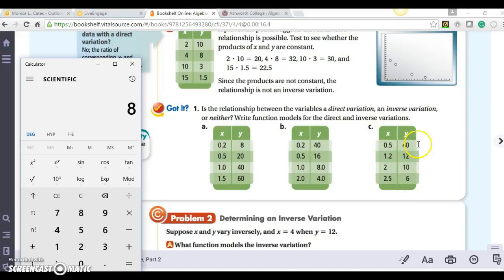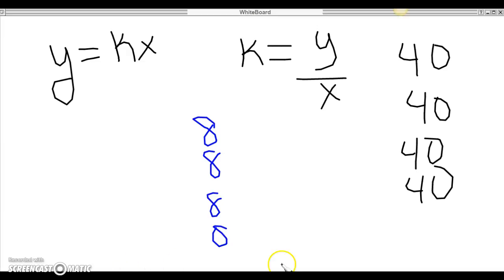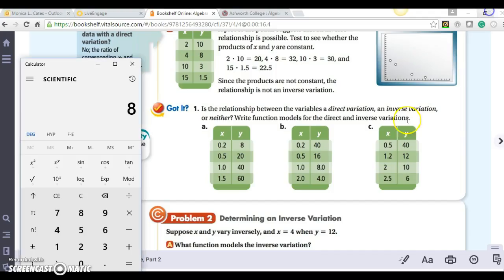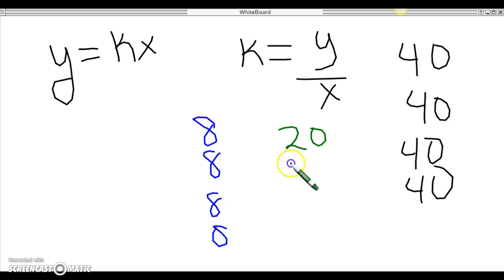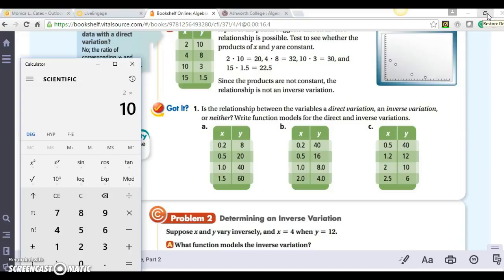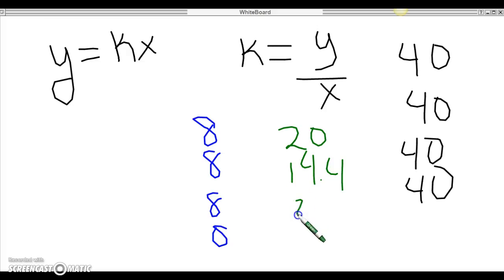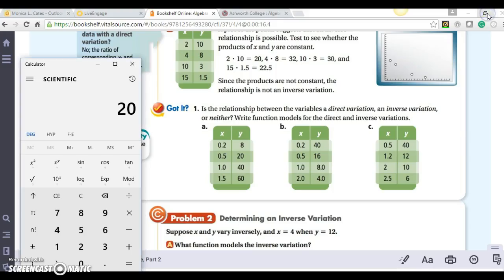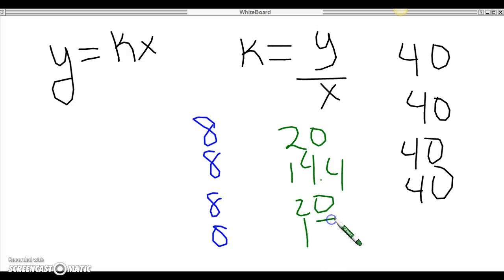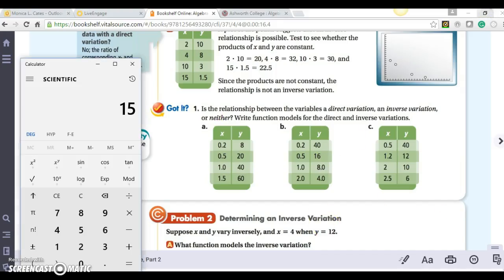Let's multiply them to see what we get. The first one is 20, I can already see that. When I do 0.5 times 40, I get 20. Then we'll do 1.2 times 12, and I get 14.4, and I can really stop right there because they're not alike. But we'll go on. We'll do 2 times 10, which is 20, and then I have 2.5 times 6, which is 15. So this is an example of a neither. My k value was not constant. I hope this helps.